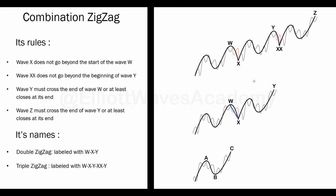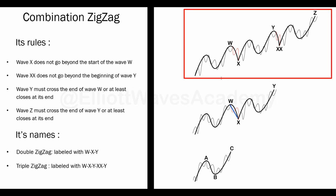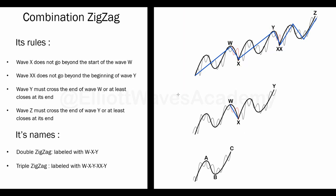Sometimes we don't see just two zigzags combined with each other — we see three zigzags combined with each other using two combination waves. We see a zigzag combined with another zigzag, then another combination wave, then a third zigzag. In this case, we call this pattern a triple zigzag, which is also a combination wave. We name it a combination wave because we have three zigzags combined with each other.